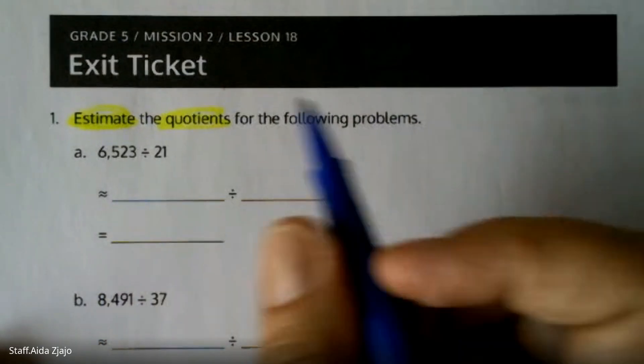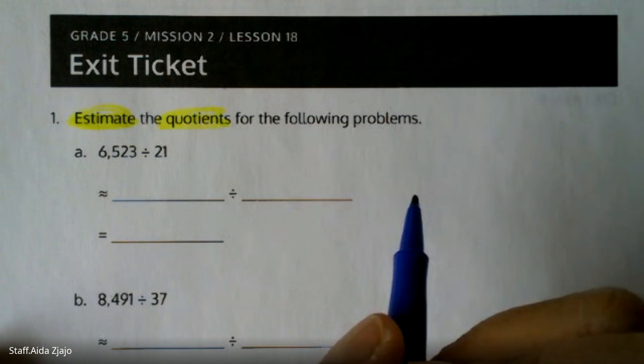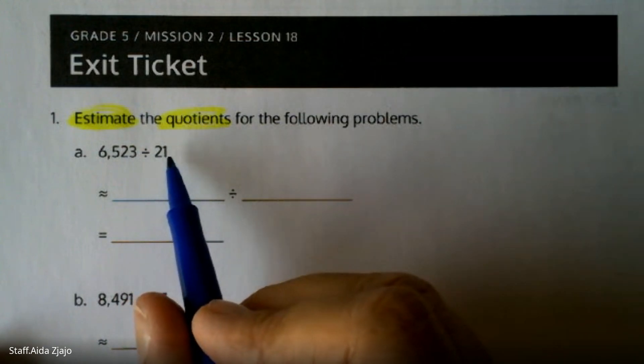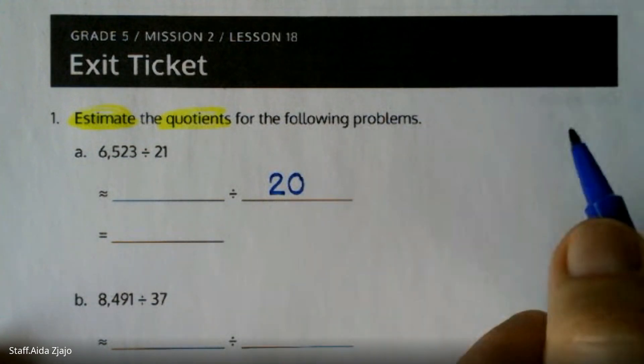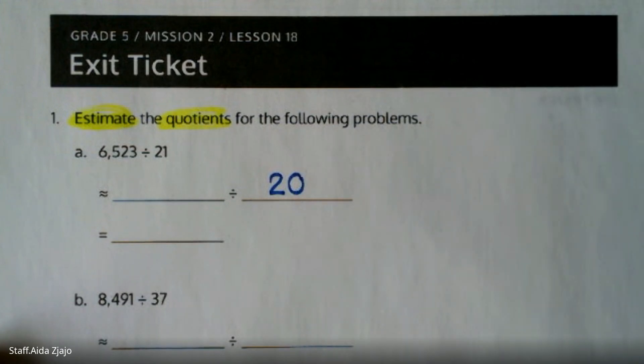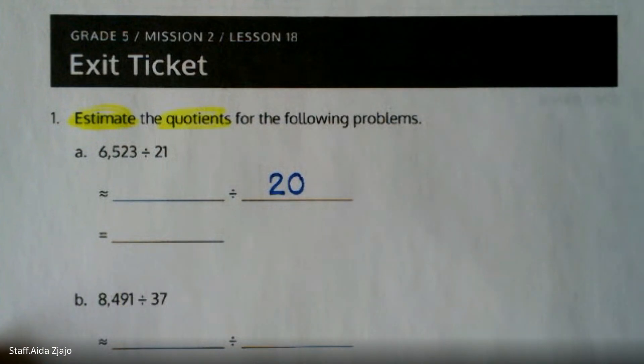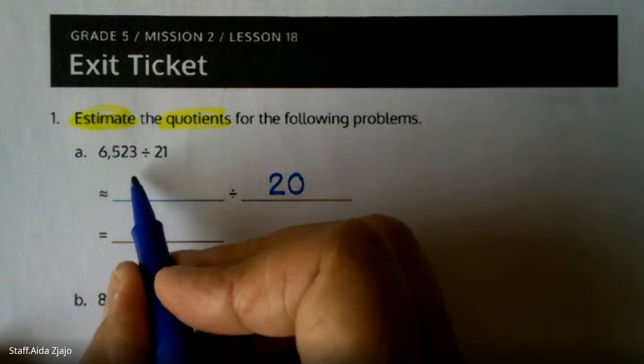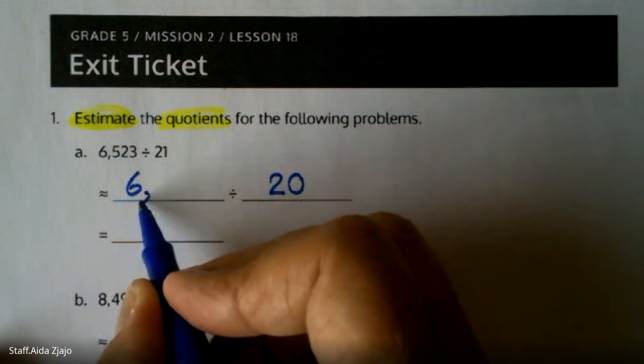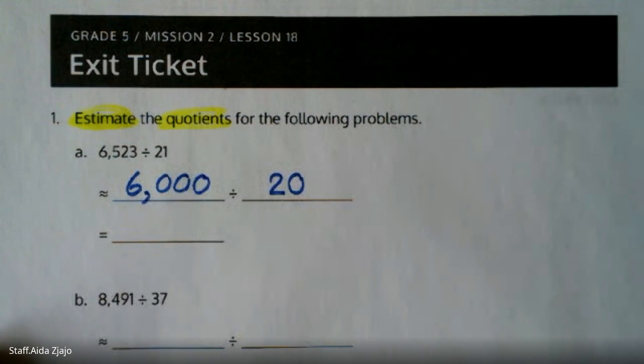If you think about 6,523 divided into 21 groups, this 21 I could deliver to 20, so that would be in 20 groups instead of 21 groups. And because this is 6,523, I'm looking to have this to be 6,000 because the 6 is divisible by 2, so it's easier for me to think that way.